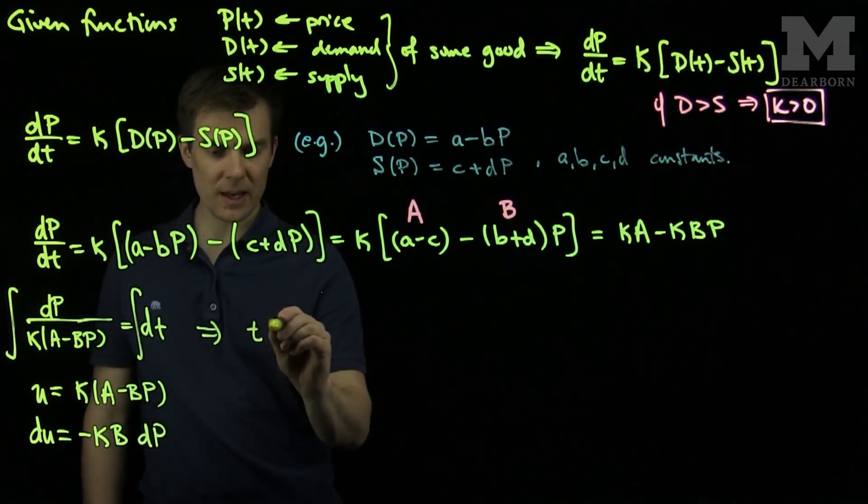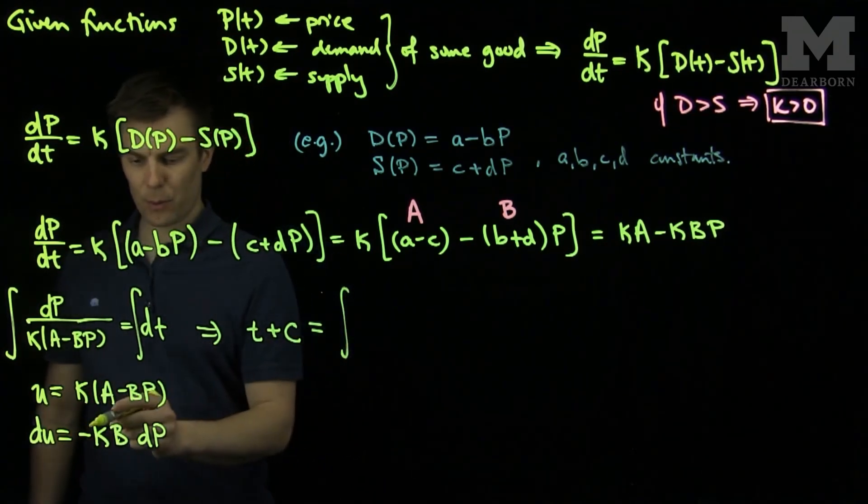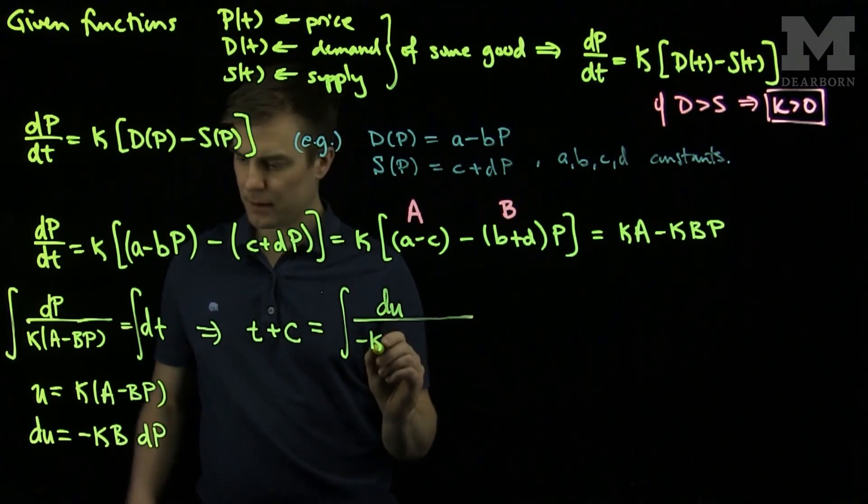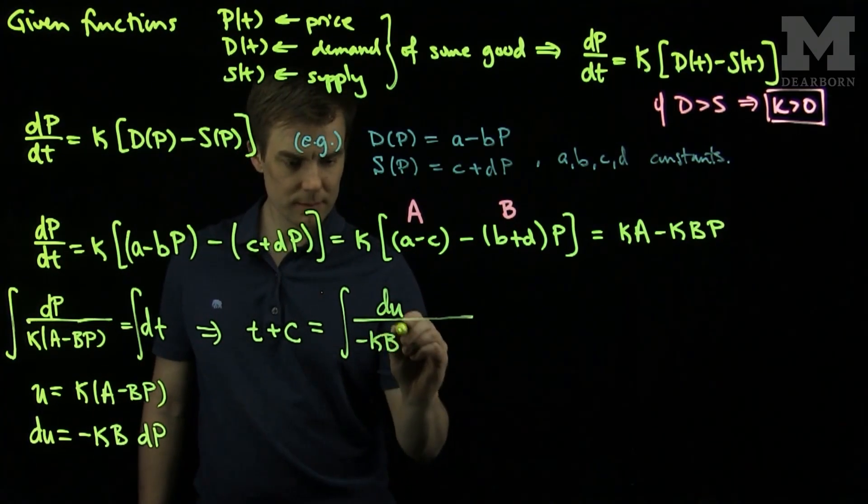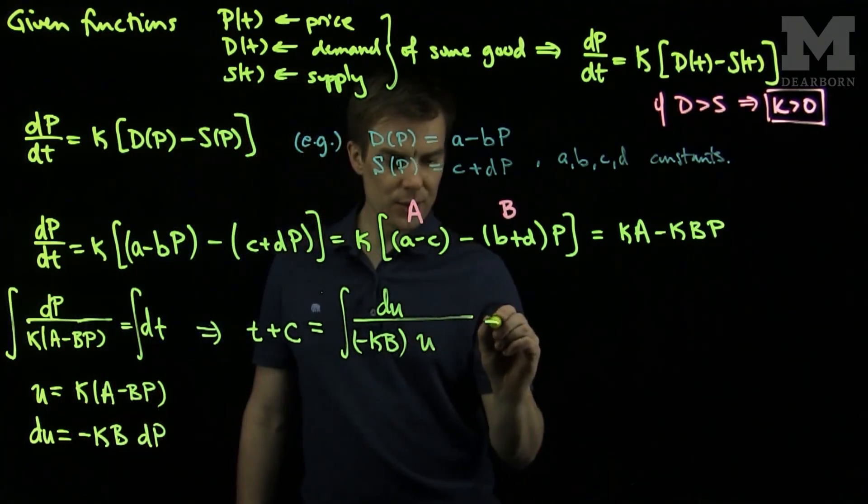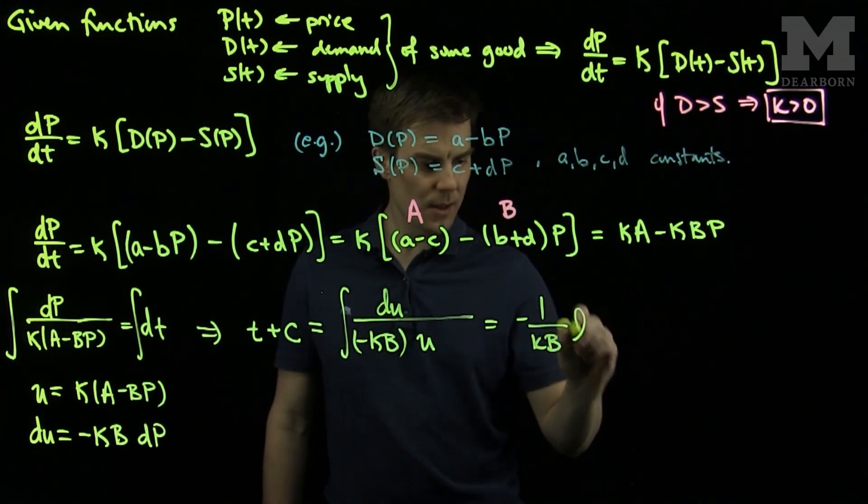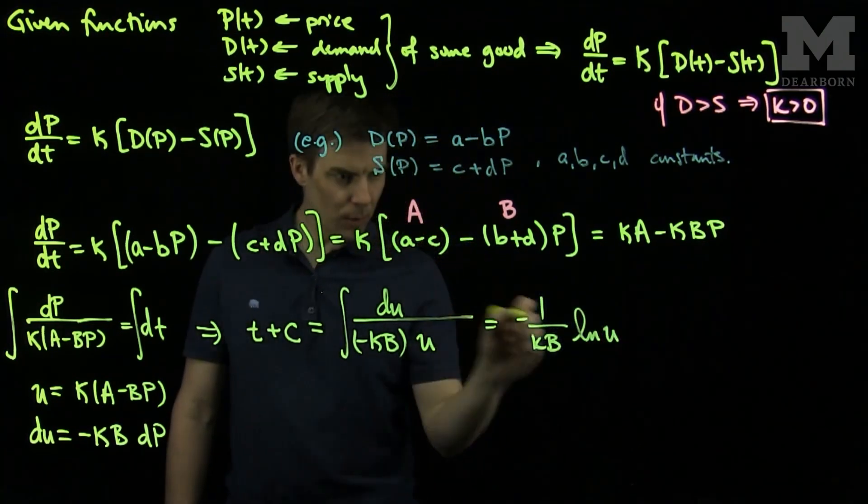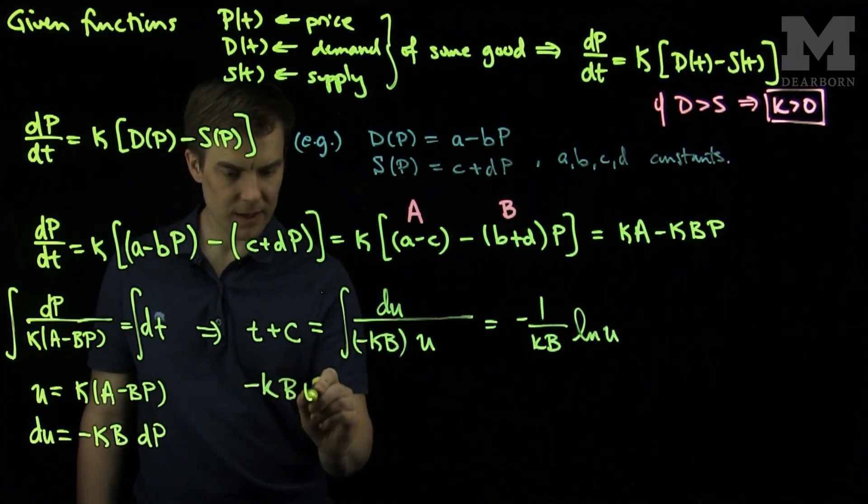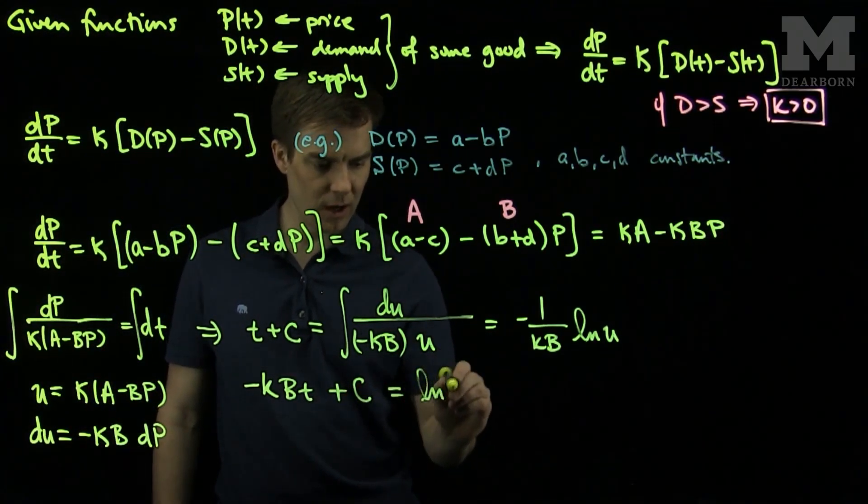And so I will have that t plus a constant c is equal to the integral. I will replace dp with a du, and I'll have to divide that by negative KB. And then the expression in the denominator is exactly just u. So now this will give me a 1 over KB with a negative sign, the natural log of u. So multiplying this negative KB by both sides, I will have that negative KB times t plus a constant c is equal to the log of u.